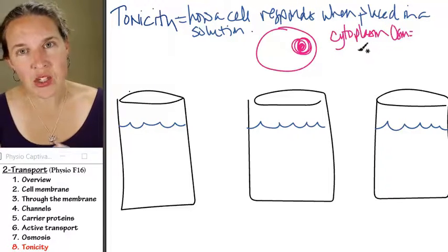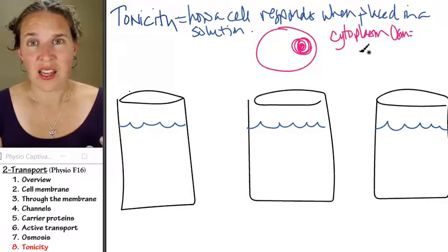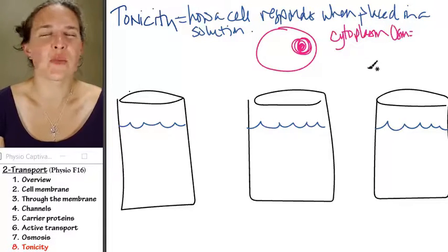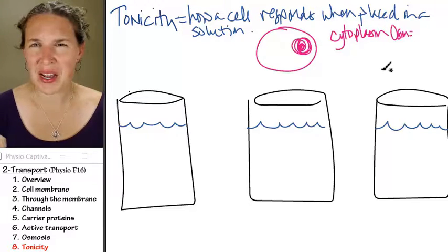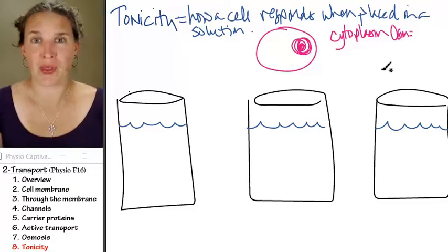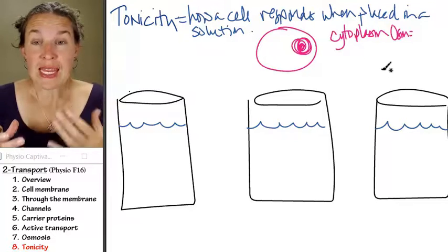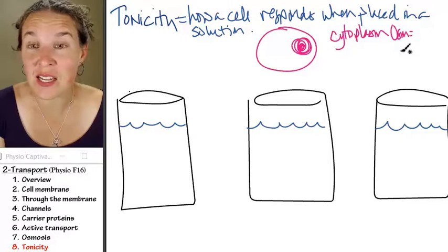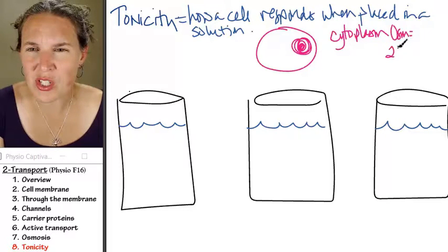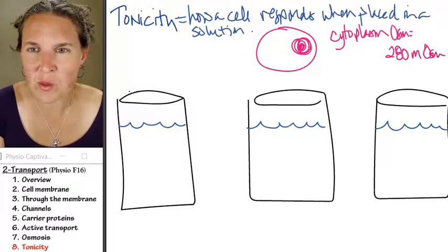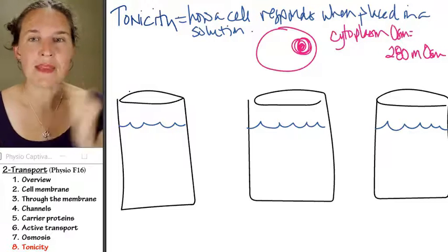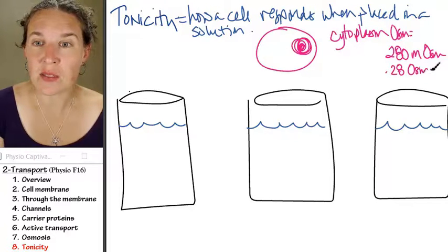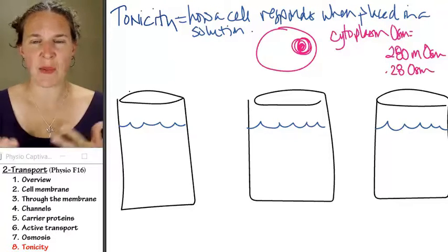The cytoplasm in your cell is not pure water. It's like salty. There's sodium, potassium, proteins all over the place, chloride ions, all sorts of stuff in the cytoplasm of your cell. It does not have an osmolarity of zero. In fact, it has an osmolarity of about 280 milliosmoles. You could also say 0.28 osmoles instead.